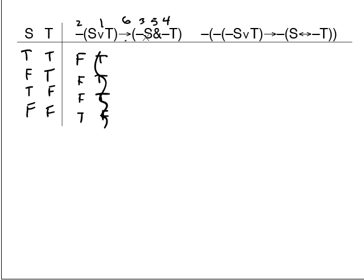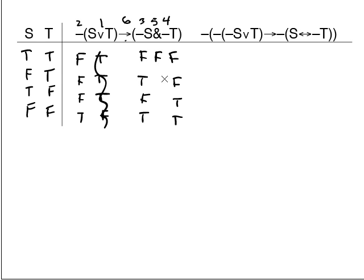Next step is dash-s. I'll go straight to writing in the negation of s, which is false, true, false, true. The same thing for dash-t — the negation of the t column — giving false, false, true, true. Now I work on the ampersand. Ampersands are true only when both parts are true: false and false is false; true and false is false; false and true is false; true and true is true.